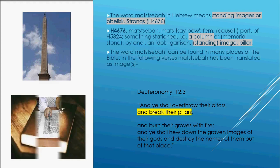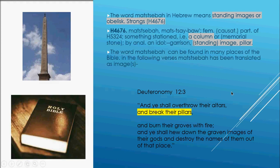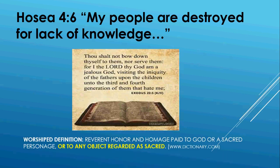The Hebrew word 'Matzevah' means a station, a column, a pole or shaft, and it can be found in many places in the Bible. I chose Deuteronomy 12:3: 'Ye shall overthrow their altars and break their pillars and burn their groves with fire and ye shall hew down the graven images of their gods and destroy the names of them out of that place.' The obelisk represents the sun god Ra and is worshipped as a sacred image. My people are destroyed for lack of knowledge.